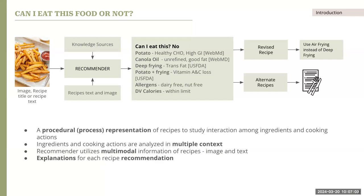To put it specifically, the recommender would require procedural representation that explicitly captures the interaction among the cooking actions and ingredients. The recommender should also have access to knowledge sources so that the elements can be analyzed in multiple contexts. For example, potato is a healthy carbohydrate, also has high glycemic index, and deep frying introduces trans fat. Potato plus deep frying results in vitamin A and C loss, and also what this particular recipe means to the user's health condition and food preferences. The recommender should also be able to handle multimodal information — images and text — and in order to ensure trustworthiness and safety of the system, the recipe recommendation should also be traceable, with sources of knowledge presented to the user.